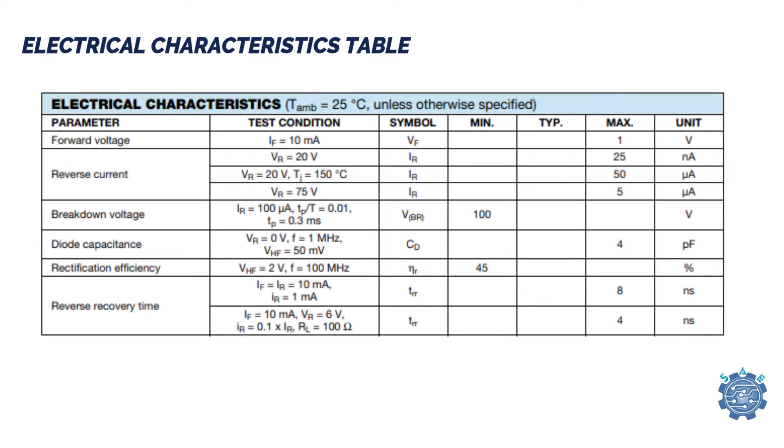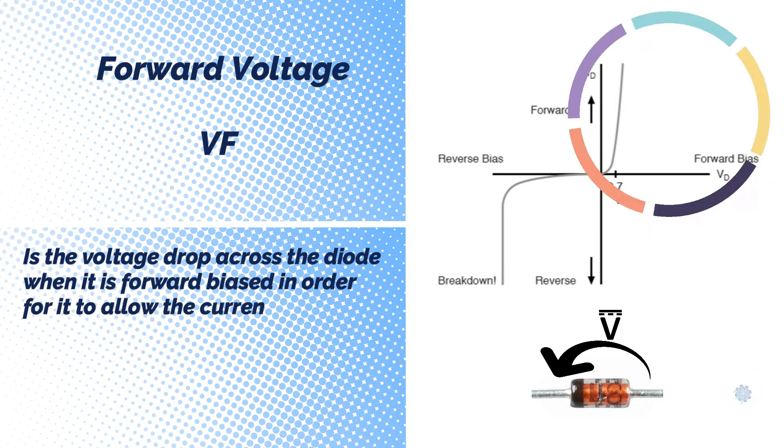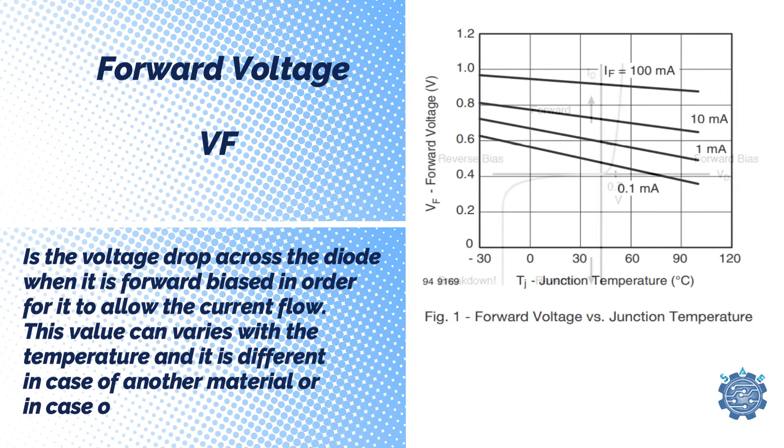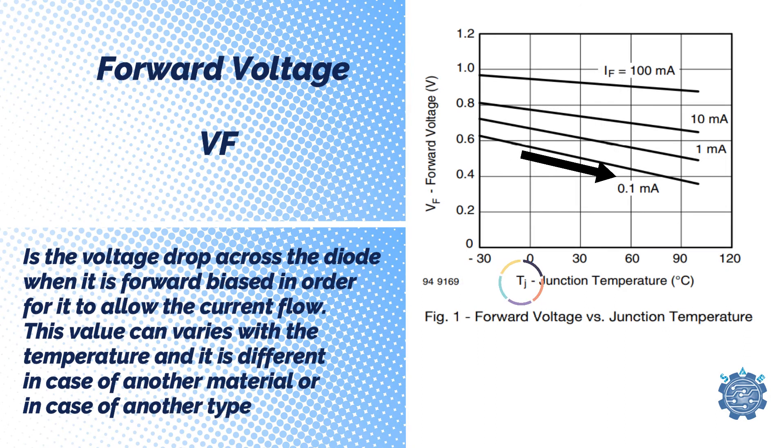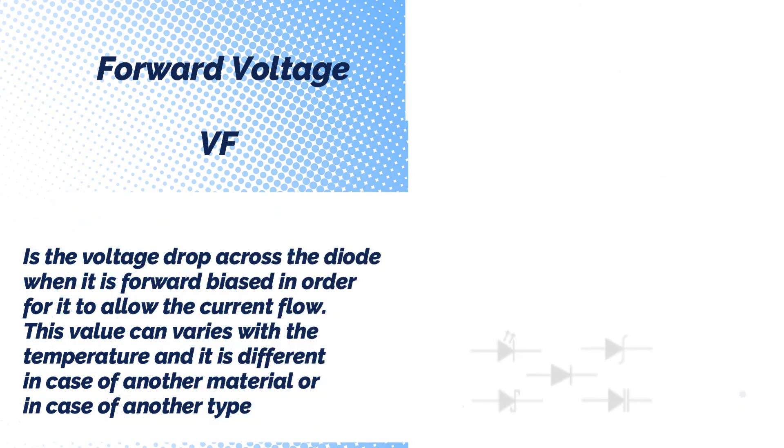Last but not least is the electrical characteristics table. Forward Voltage is the voltage drop across the diode when it is forward biased in order for it to allow the current flow. This value can vary with the temperature and it is different in case of another material or in case of another type.